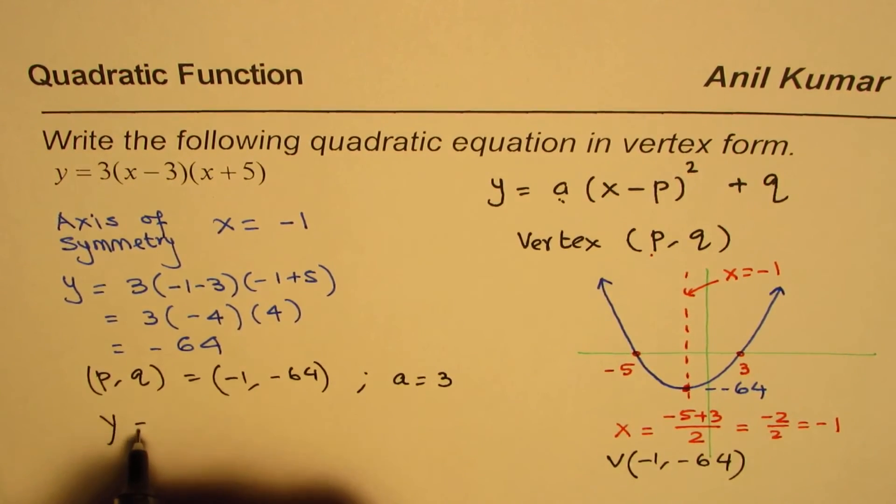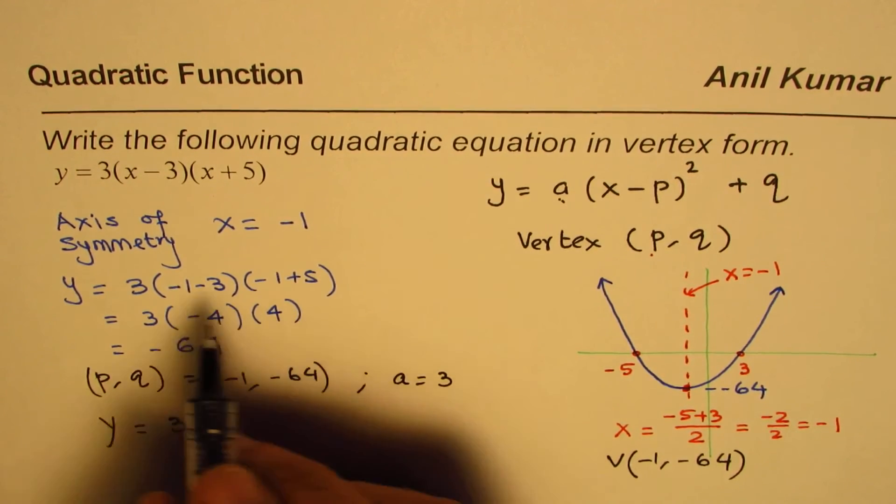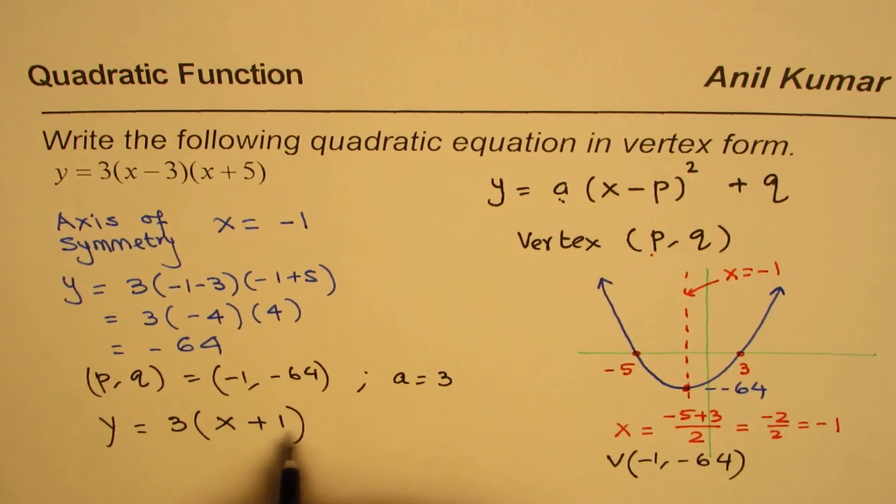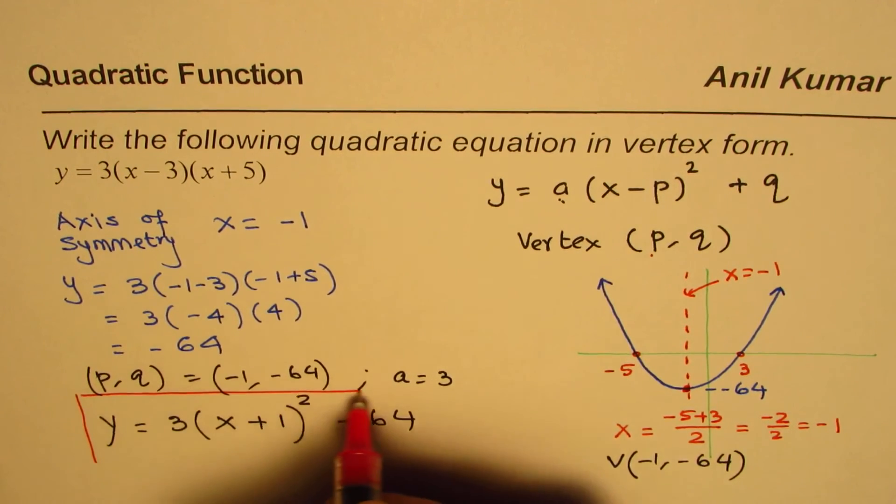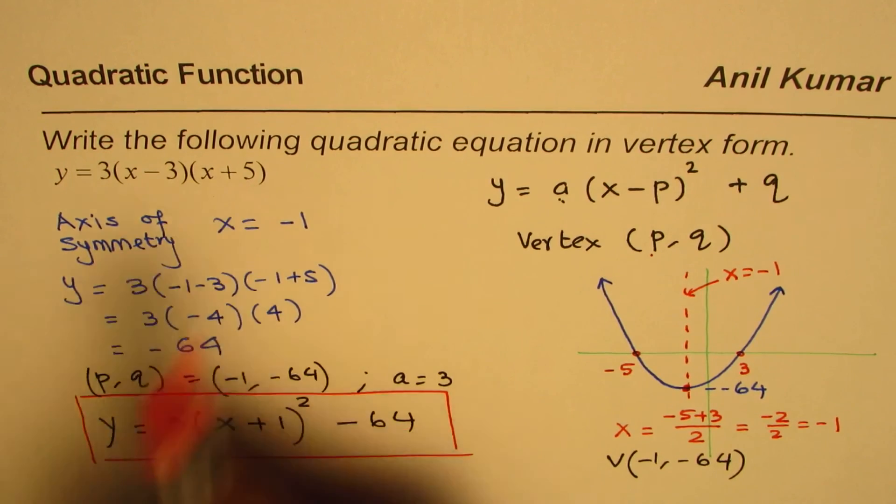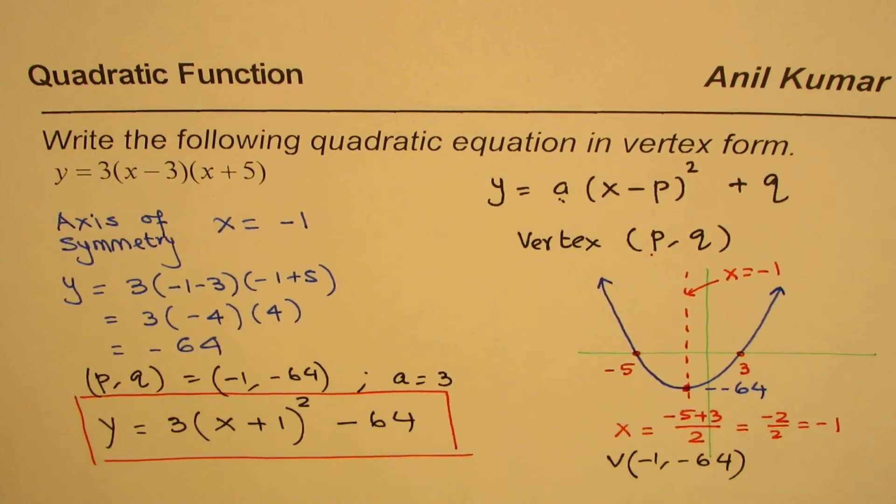Once we know that, we can write the equation in vertex form. So the equation is y equals 3 times x minus of minus 1, which gives plus 1, whole square minus 64. So that is how you can actually write the equation in vertex form from intercept form without completing the squares. That's the beauty.